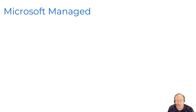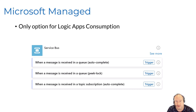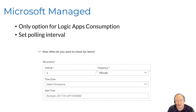When using the Microsoft managed connector, it's going to look a little bit different. You will see that there's no in-app tag to identify this as an in-app connector, which means that this is the Microsoft managed connector. As I mentioned, this is your only option if you're using Logic App consumption. Once you select this connector and if you're using it as a trigger, you have to define a polling interval. This could be anywhere from minutes to seconds or even days or weeks depending on your use case.